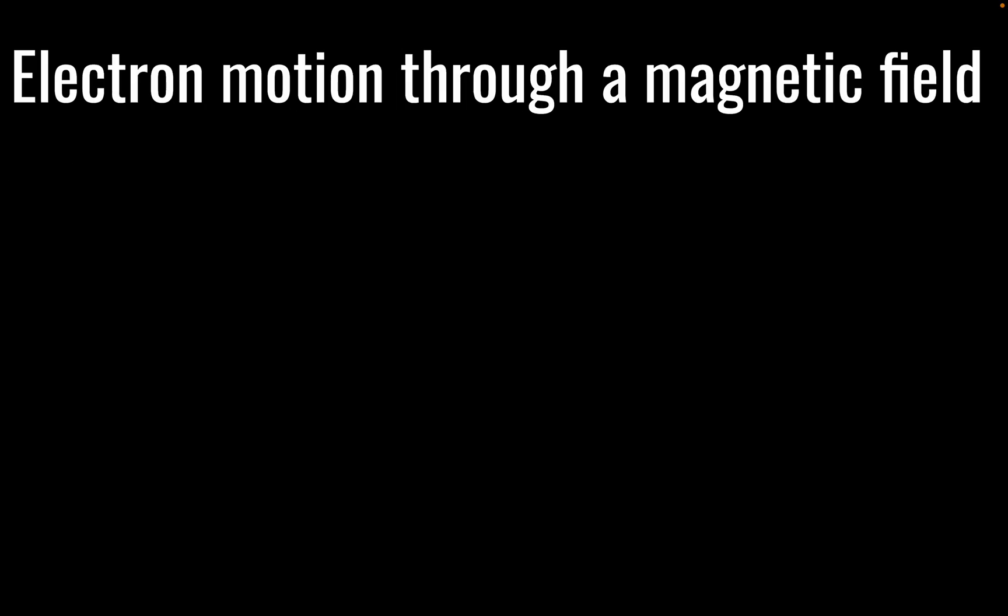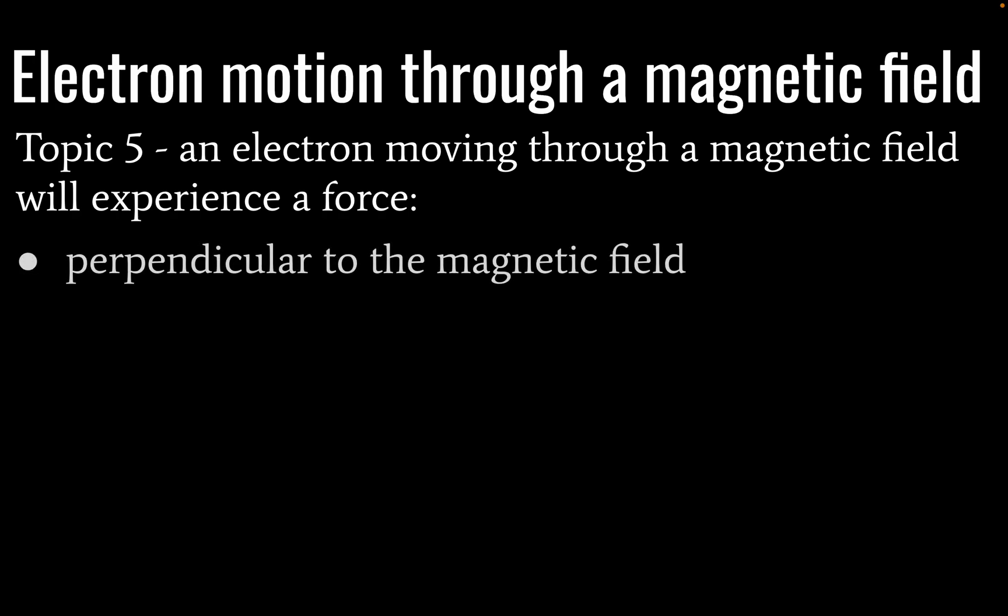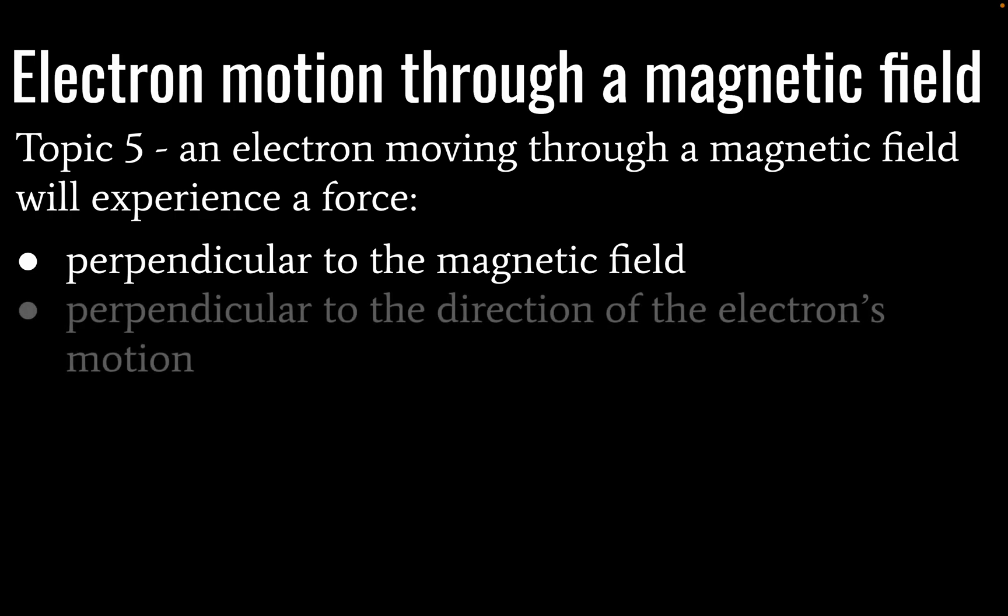First we're going to look at the motion of an electron through a magnetic field and you should recall from topic 5 that an electron moving through a magnetic field is going to experience a force. That force will be perpendicular to the magnetic field. It will be perpendicular to the direction of the electron's motion. So this is going to give us our first right hand rule.